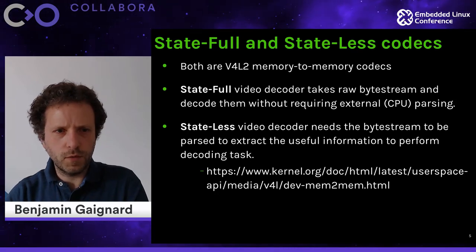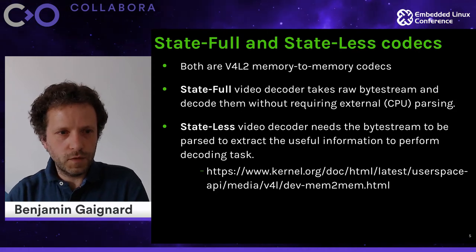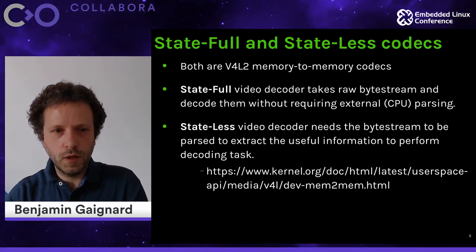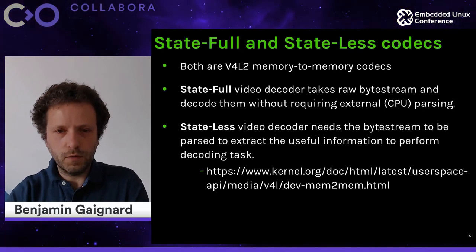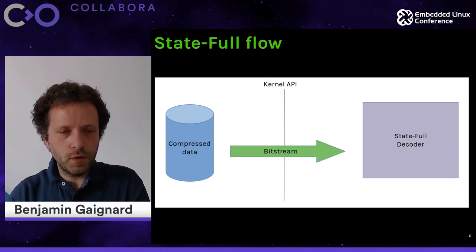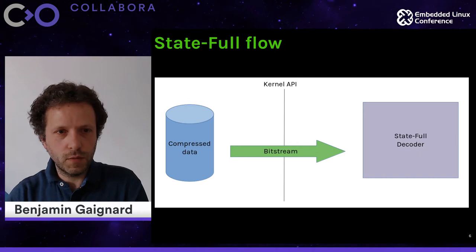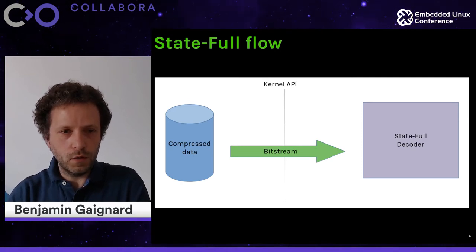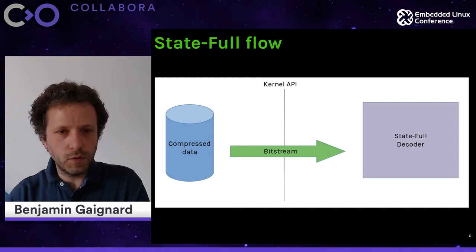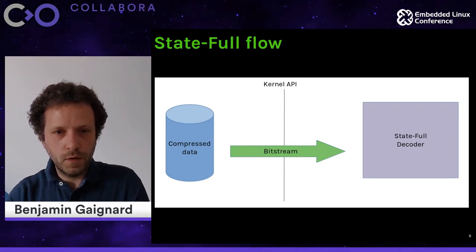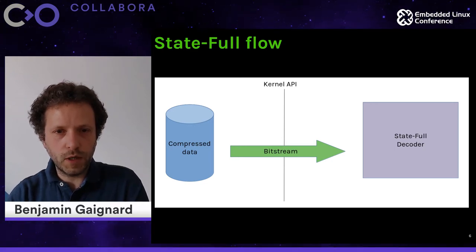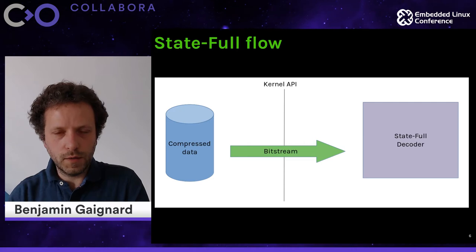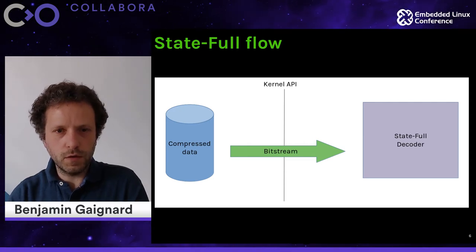For the stateful case, you just specify the type of the bitstream and send it to the hardware. The stateful flow is quite simple: you take the compressed data, extract the bitstream, and send it through the kernel API to a stateful video decoder. You only have to put a type on the bitstream and send it to a hardware block that will decode it. Maybe there is some firmware involved, but it's more or less a black box — you send it and get a decoded frame.